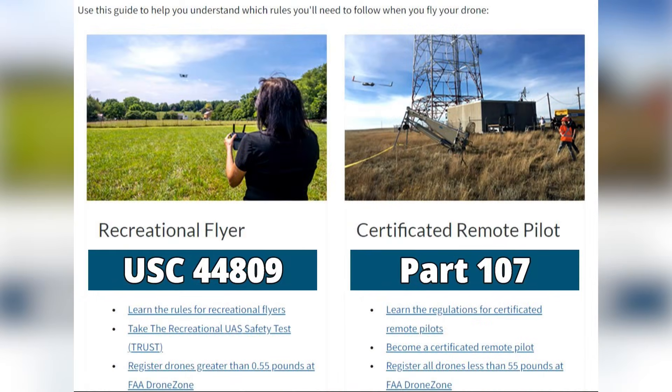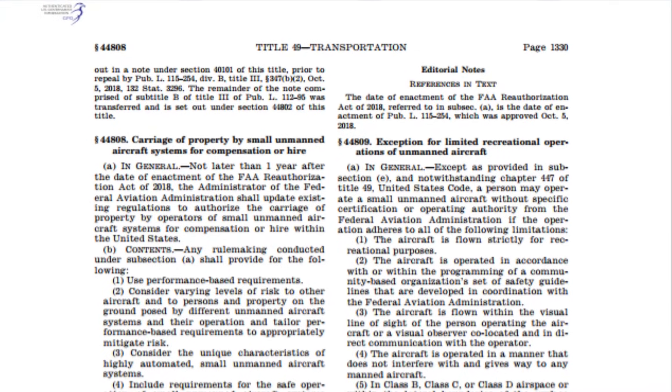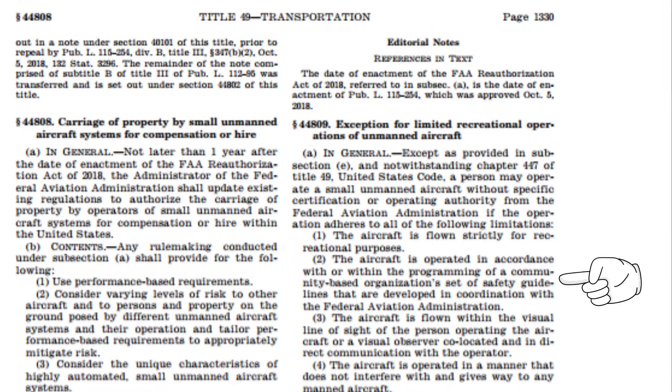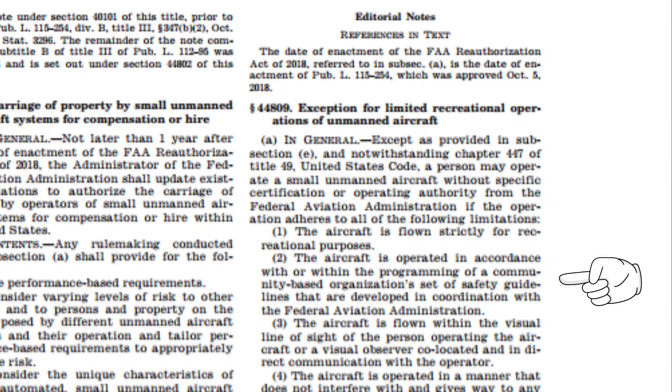For those of you that do not have a remote pilot certificate under Part 107, you should know that USC 44809, which you're required to comply with, also contains this visual line of sight requirement. USC 44809 also requires you to follow the safety guidelines of a community-based organization, and these CBOs have this requirement as well.